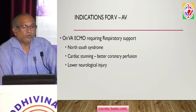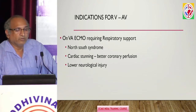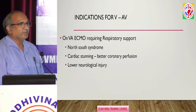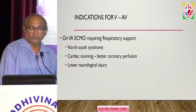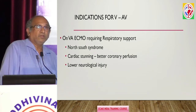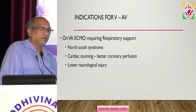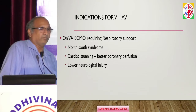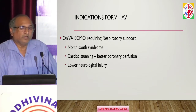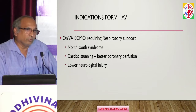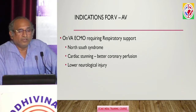A patient on VA ECMO requiring respiratory support is another indication — for example, when a patient develops north-south syndrome or Harlequin syndrome, where the cardiac condition starts improving but the lungs are still bad. You then require VA-V ECMO. Also, when there is cardiac stunning and the underlying lungs are also bad, you switch to VA-V so it provides better oxygenated blood to the coronary circulation, potentially improving cardiac stunning and reducing neurological injury.